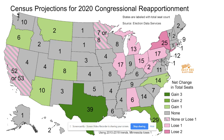The seats being gained are in more Republican areas, and the seats being lost — the pink ones — tend to be in more Democrat areas. Texas, shown in dark green, is going to gain three congressional seats, while New York, in bright pink, is going to lose two. Overall, reapportionment is probably going to help Republicans, going from more liberal states to more conservative states. This will affect both Congress seats and the Electoral College.